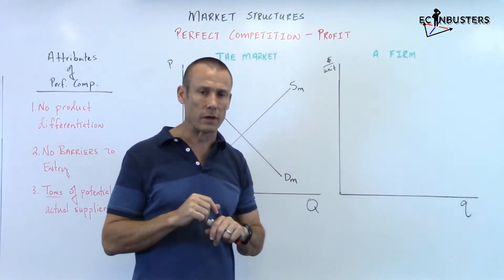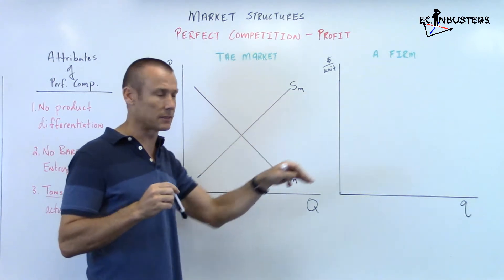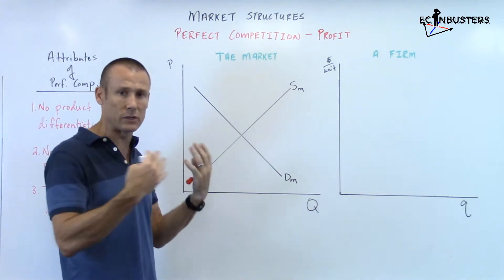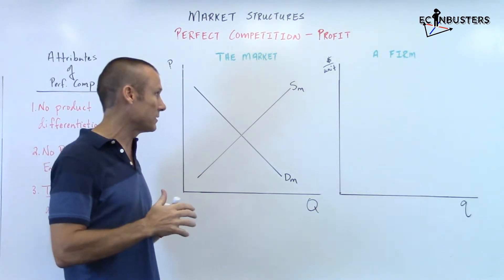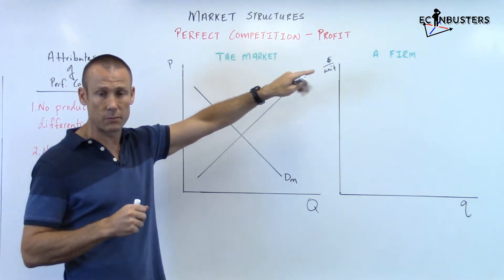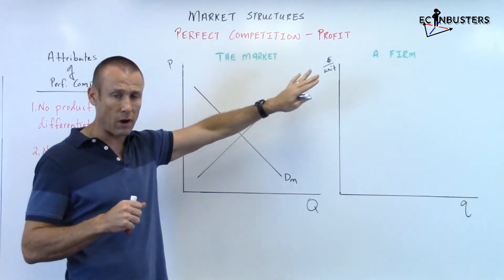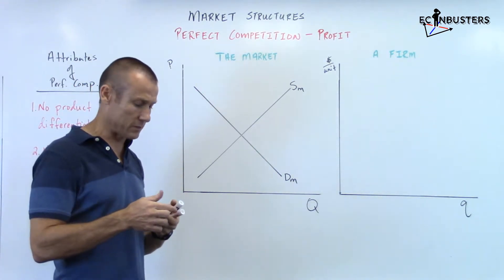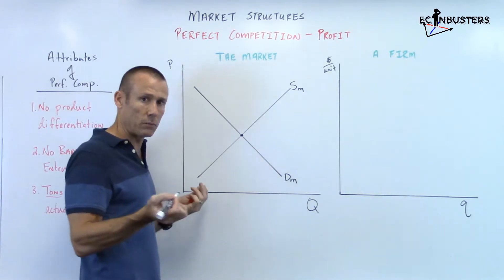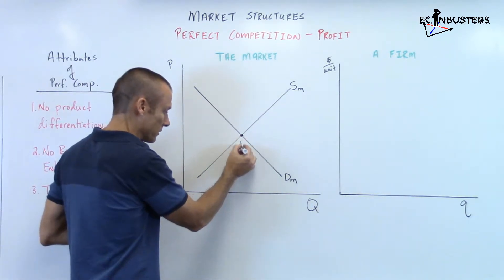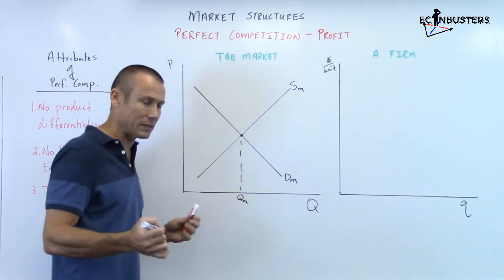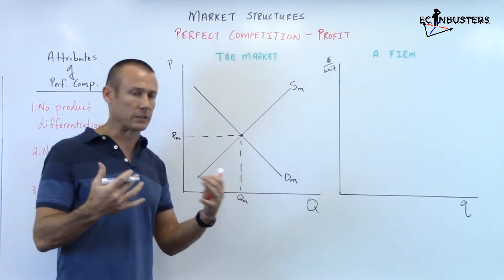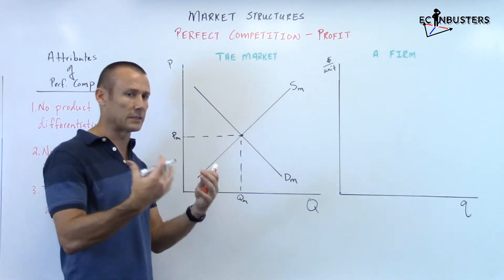So when you see profit, you know we're in the short run. We have a side-by-side analysis, where the vertical axis is calibrated exactly the same on both graphs. The reason we do side-by-side analysis for perfect competition is that we need to know the price the firm is going to face. We draw the market because the market determines the price — grab that intersection point between supply and demand to get the market quantity and the market price.